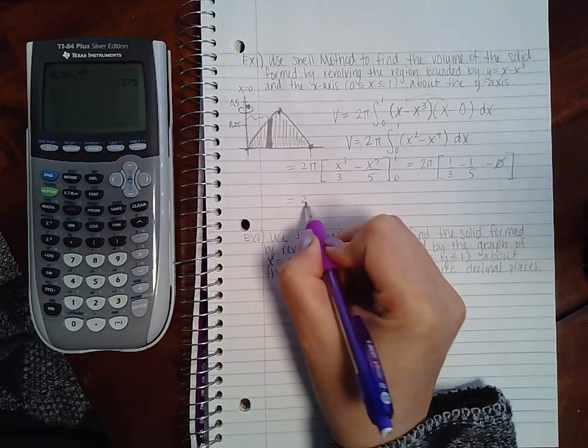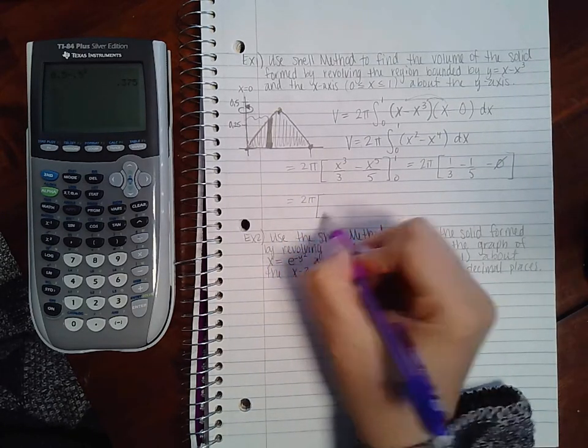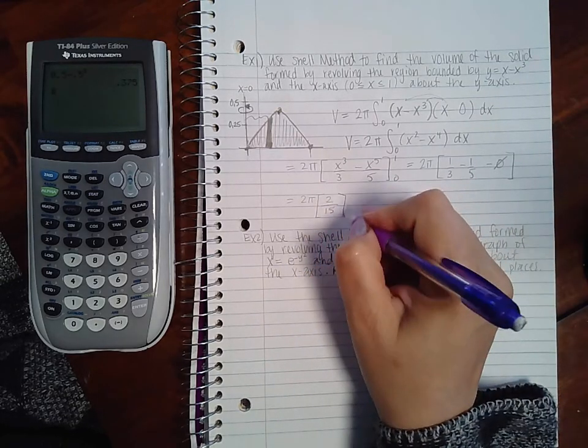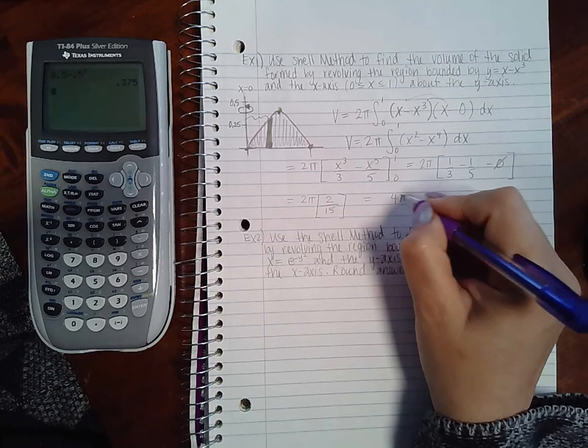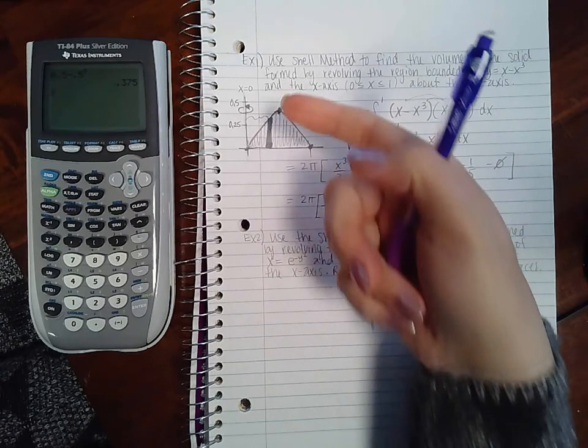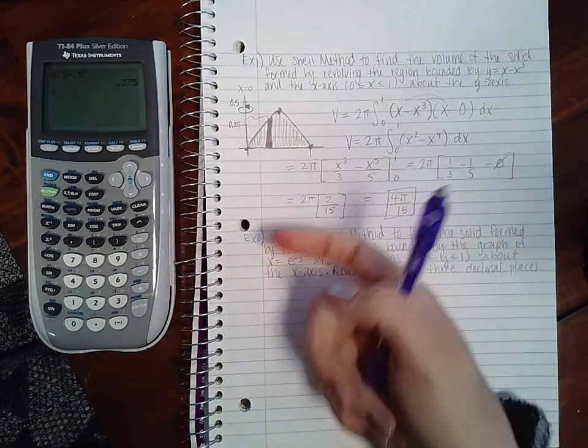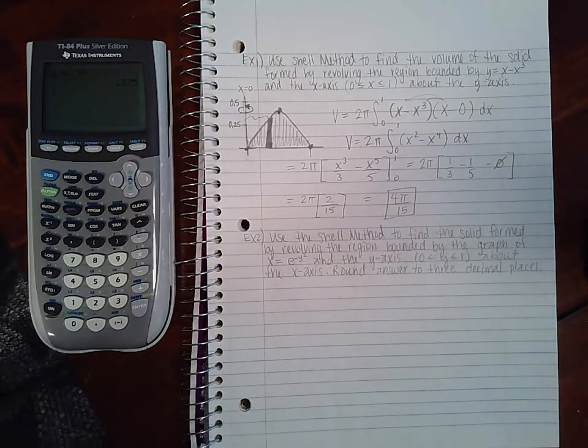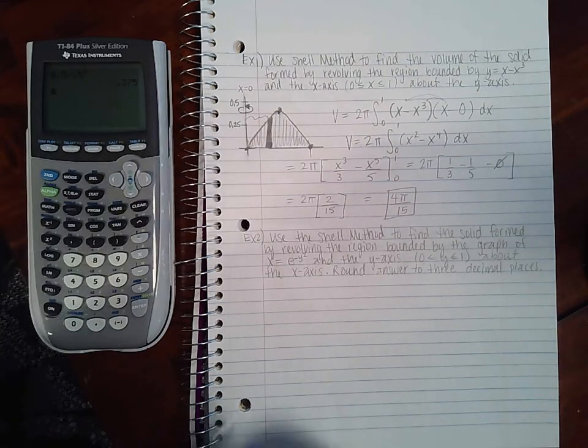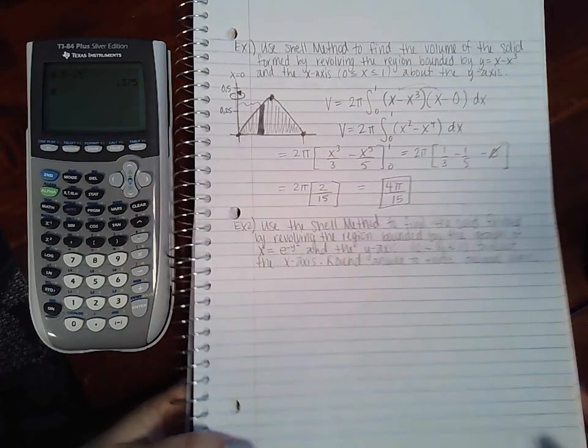And then let's evaluate this, so we get 1/3 minus 1/5 minus a big fat 0. So we get 2π times 2 over 15, which means we end up with 4π over 15. This is the volume of this solid of revolution once it creates that entire shape—basically looks like an egg after all the revolving has taken place.